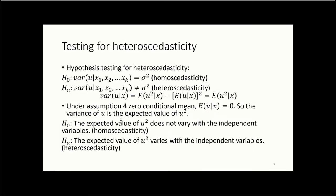To test for heteroscedasticity, the null hypothesis H0 is that the variance of u given x equals sigma squared — the homoscedasticity assumption. The alternative hypothesis HA is that the variance of u given x does not equal sigma squared, indicating heteroscedasticity. If we find homoscedasticity, there is no problem and we can use the tests as-is. If we find heteroscedasticity, we need to make corrections.